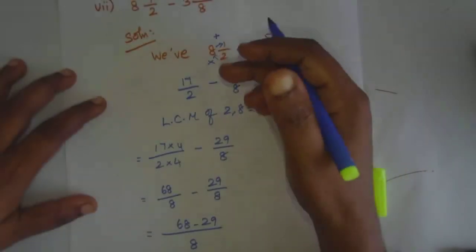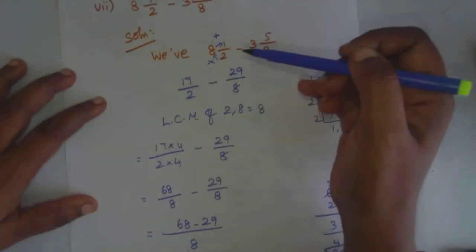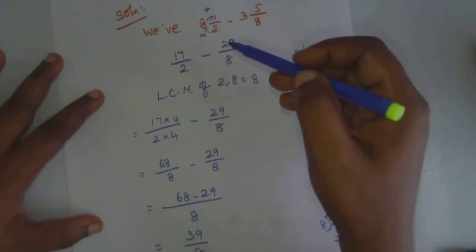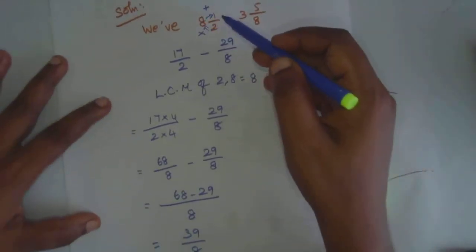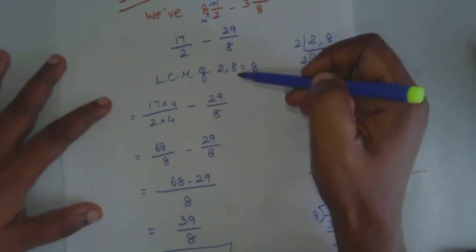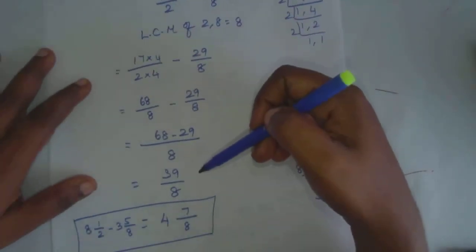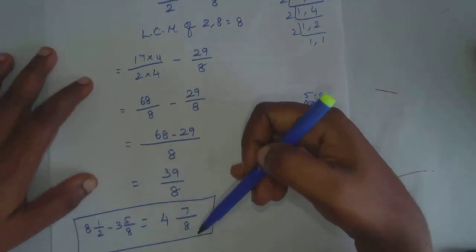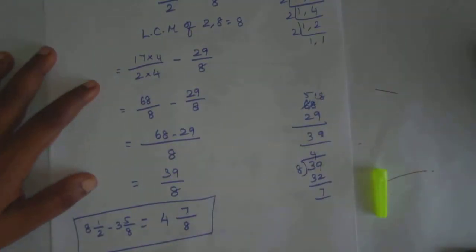So, first step: we convert mixed fractions to improper fractions. Then we can solve the equation. This gives us the final answer. This is the 3 marks question.